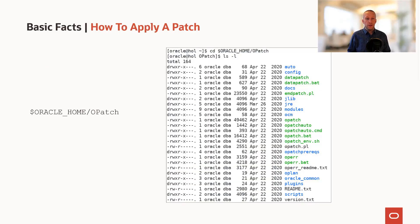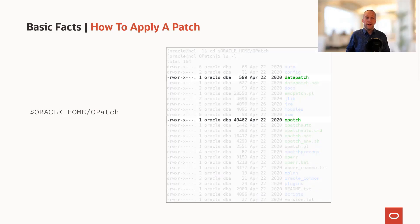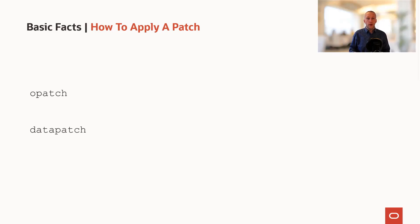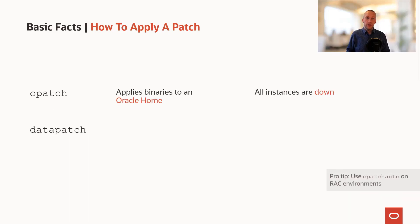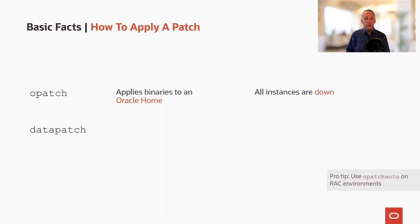Now, how do you apply a patch? Well, if you look in your Oracle home directory and go into the opatch directory and do an ls, you would see something like this. There are actually two files that are of interest: the opatch and datapatch executables. With opatch you can apply binaries or changes to binaries in your Oracle home. Since we are modifying the Oracle home with the binaries that are running the database, when you use opatch it is a requirement that all instances are shut down — all instances running out of that Oracle home.